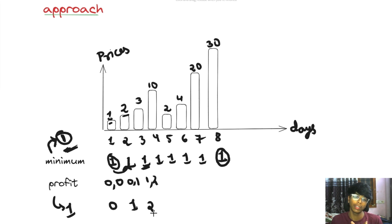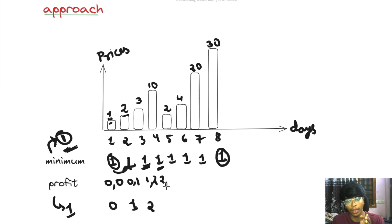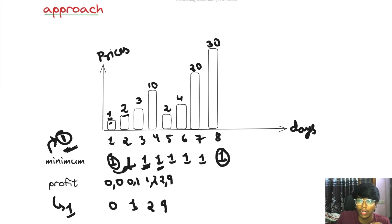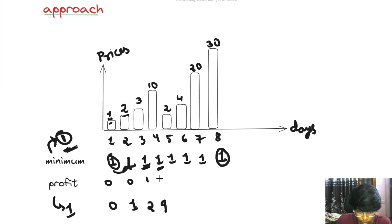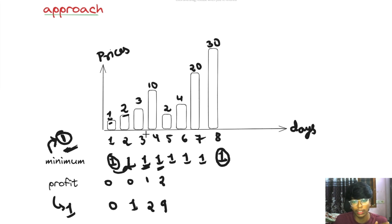Next value is 10, so minimum value is still 1 and profit is 2. Current value minus minimum: 10 minus 1 equals 9, which is greater than 2, so the maximum profit is now 9. On the fifth day, minimum value is 1 and current value is 2. 2 minus 1 equals 1, which is less than 9, so profit stays 9.